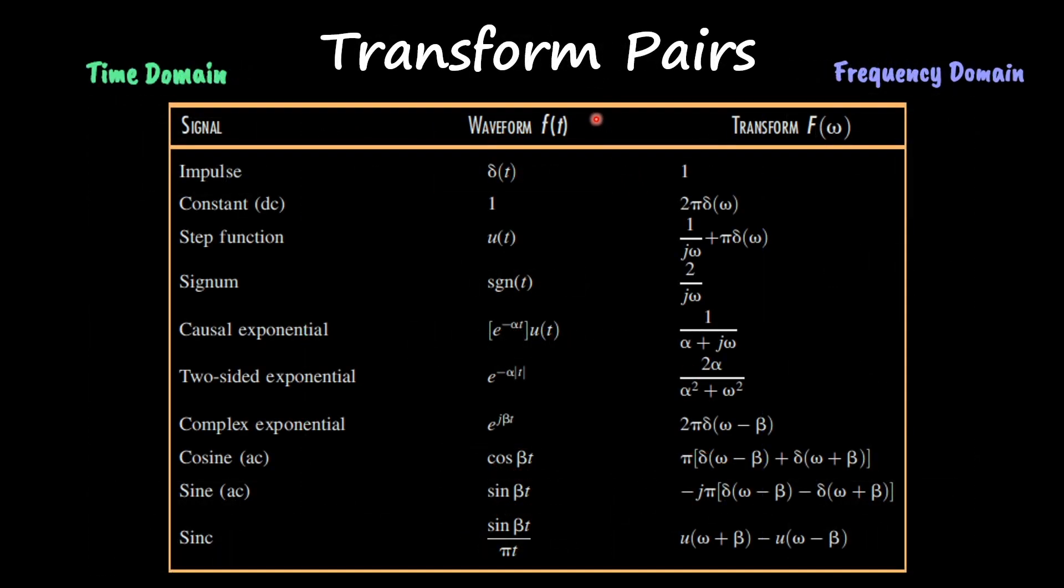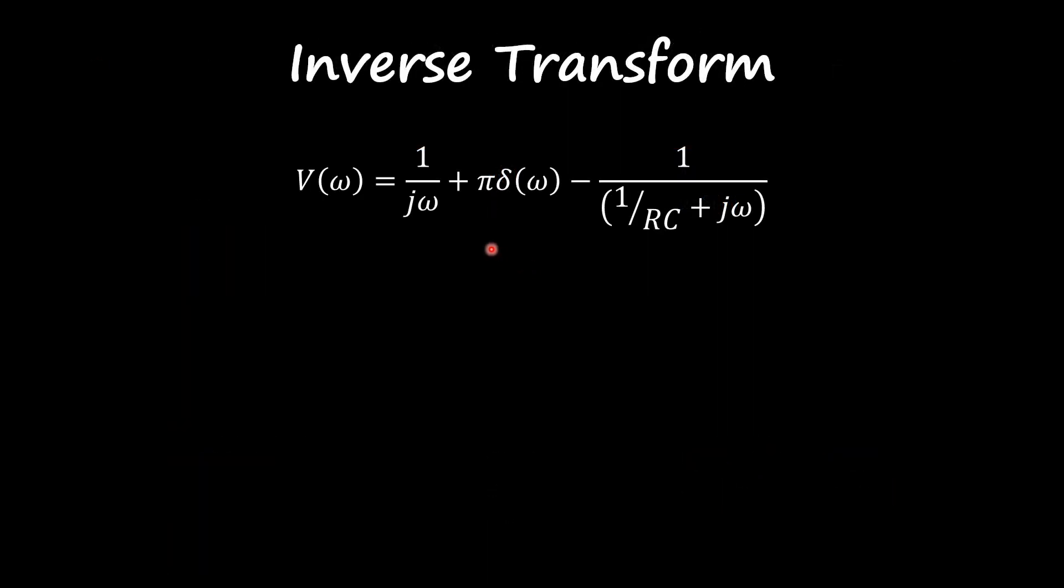For that we're going to use the transform pairs again. We use these when we were converting our signal from the time domain to the Fourier domain, sort of the frequency domain. So we were in time and we went to frequency. Now we are in frequency and we want to go to time.